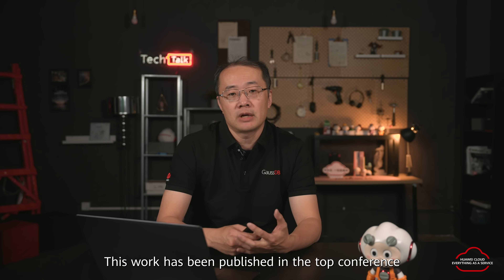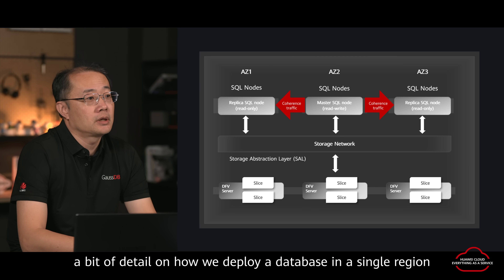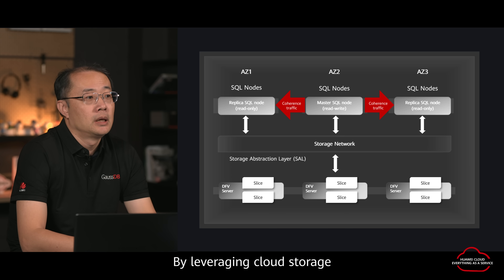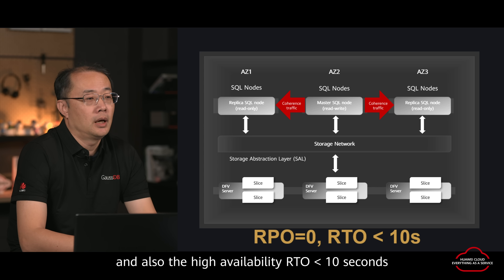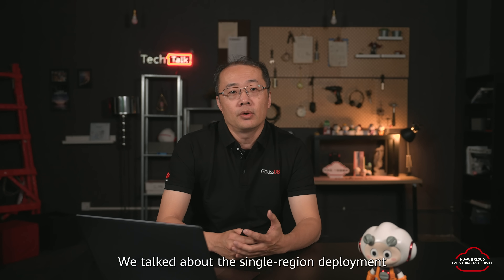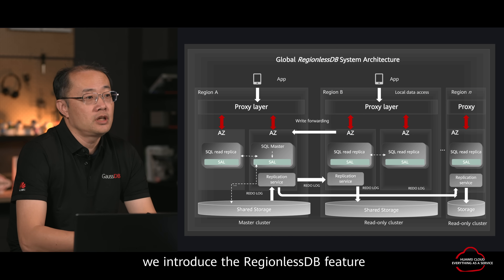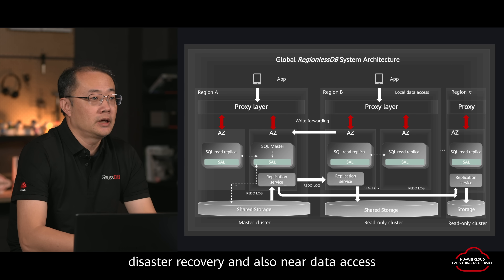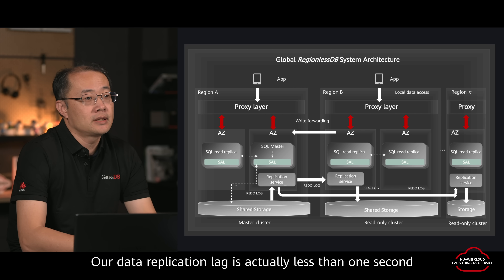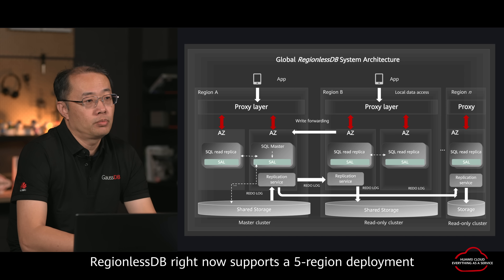This work has been published in the top conference SIGMOD, and if you're interested, you can read more detail there. The next slide shows a bit of detail on how we deploy in a single region environment — it's actually a three-AZ deployment. We leverage the storage to support cross-AZ data reliability with RPO equal to zero and high availability with RTO less than 10 seconds. For cross-region scenarios, on top of single-region deployment we introduce a RegionlessDB feature, based on physical replication technology to support cross-region disaster recovery and near-data access. Our data replication lag is less than one second — traditional technology takes seconds or even minutes — and RegionlessDB currently supports five-region deployment.